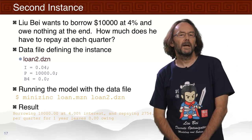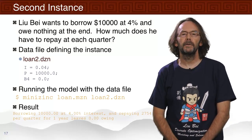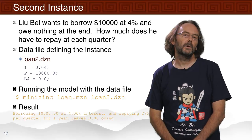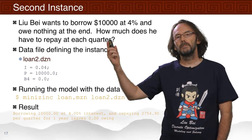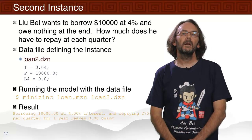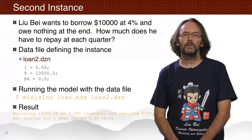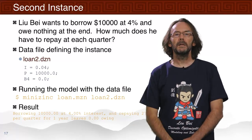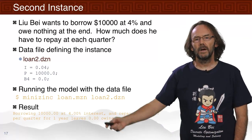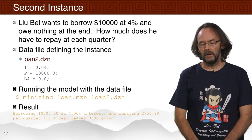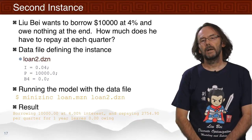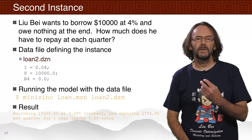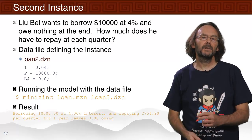We can ask different questions with the same model by using different data files. Because we're changing which decision variables we're specifying, we're asking different kinds of questions. If Liu Bei wants to borrow $10,000 at 4% and owe nothing at the end, how much must he repay each quarter? The data file gives the interest rate, principal, and a final balance of zero. Running the model, we find he must repay approximately $2,700 every quarter.